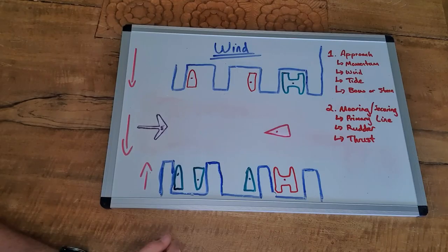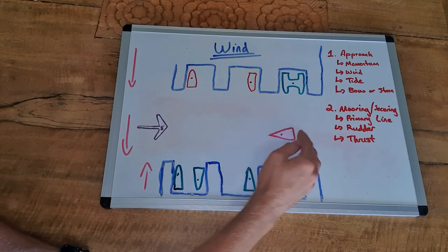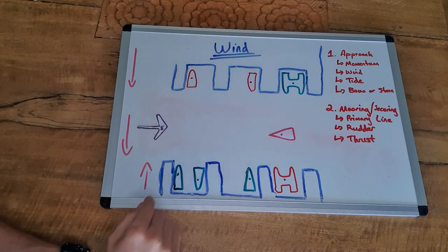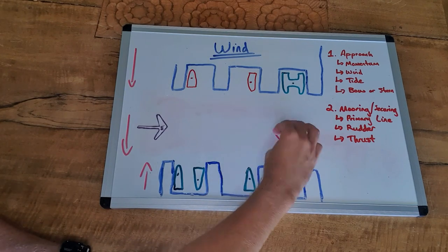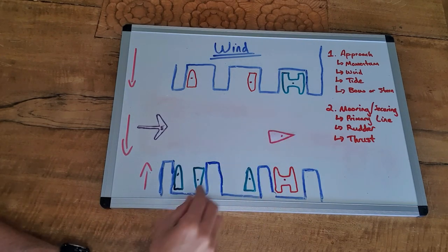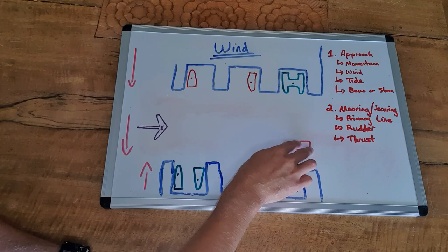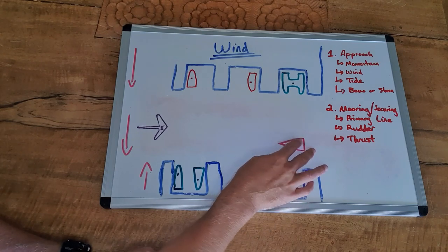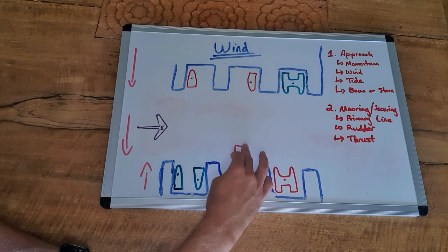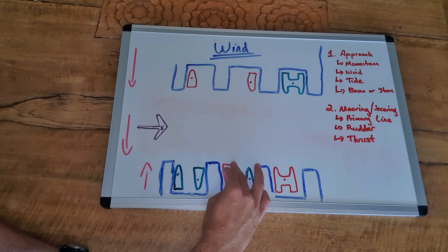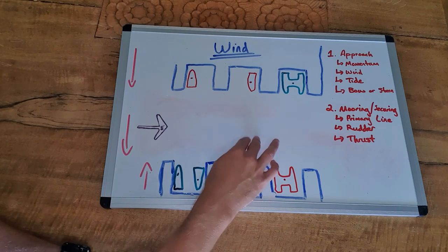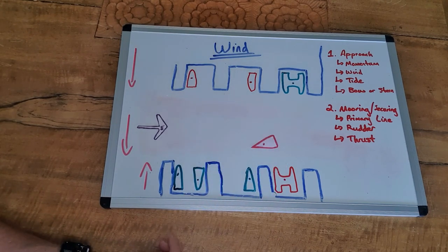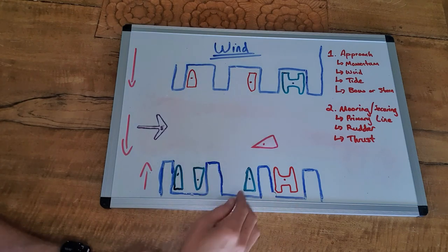In this scenario, we want to come up against the wind again, so we want to approach from this direction. And that could be bow or stern first, either way is completely fine. And we want to carry enough momentum here that it will allow us to push up against the wind as we turn in and up onto our dock. We don't want to overdo it, just enough that you need to get the job done really.